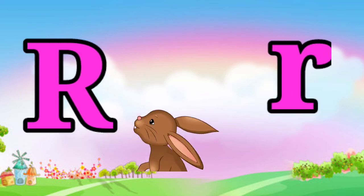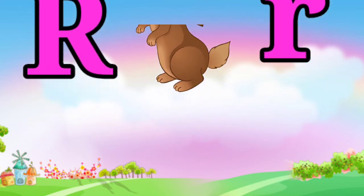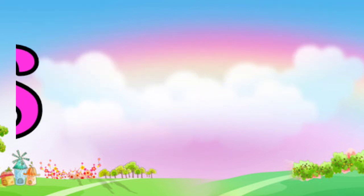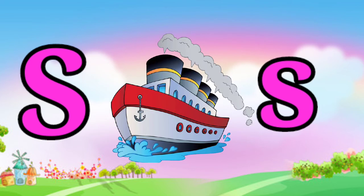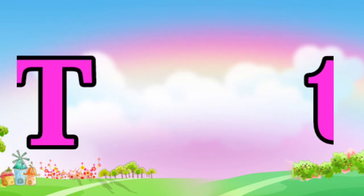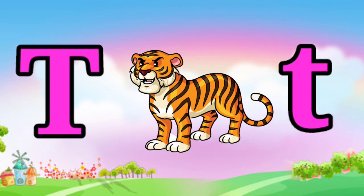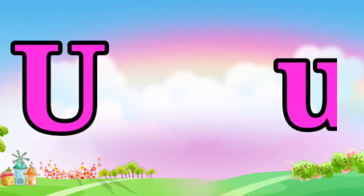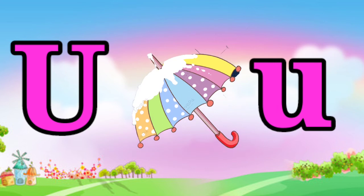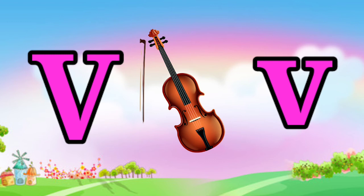R for rabbit, S for sheep, T for tiger, U for umbrella, V for violin.